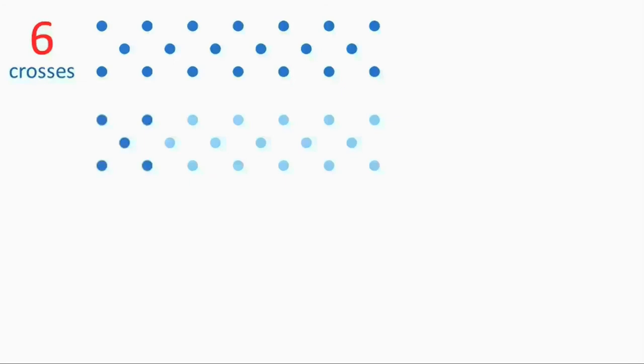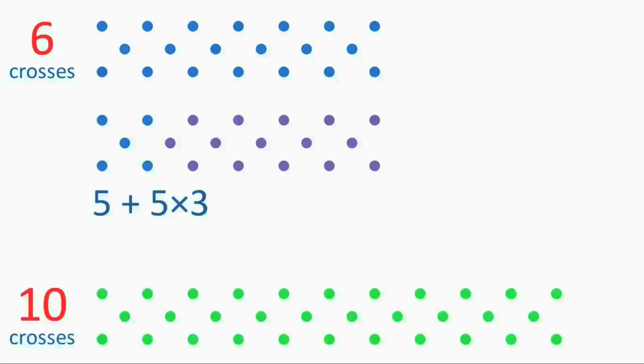Here we start with one cross of five dots. We then keep adding sets of three dots. We can write this expression for the number of dots in our chain of six crosses. And for a chain of 10 crosses, we can write this.